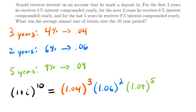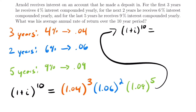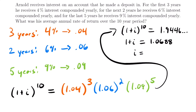Simplifying, we have (1 + i)^10 equal to 1.04³ × 1.06² × 1.09⁵. Plugging this into a calculator gives us 1.9446. To solve for i, we take the tenth root of both sides — or raise both sides to the one-tenth power — giving us (1 + i) = 1.0688. Subtracting one from both sides gives i = 0.0688, or 6.88%. That is Arnold's average annual rate of return over the 10-year period.